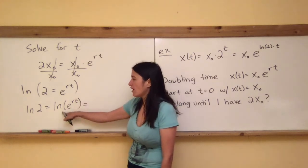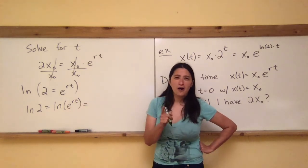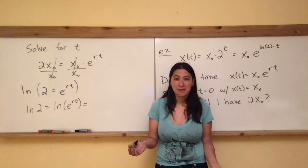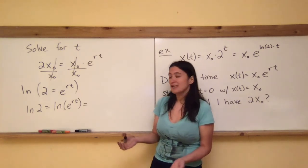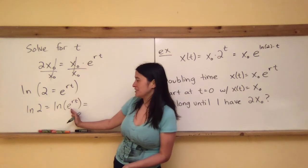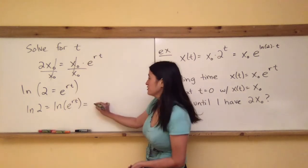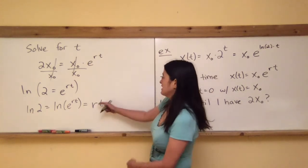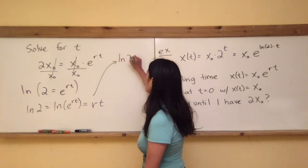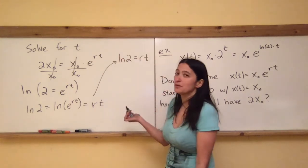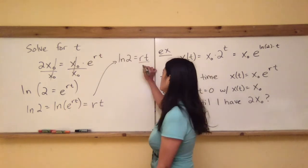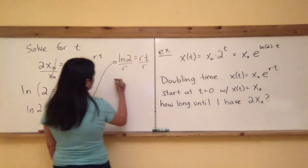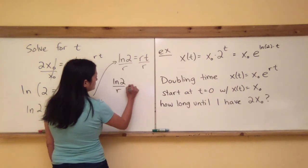And the natural log of e^(RT), what does that simplify to? Remember log and e, they're inverses of each other, remember? So they cancel out each other's operations. If you're canceling out the exponentiation by taking the natural log of it, you're just going to get whatever you had in the exponent. So you're going to get RT. So now I've got ln(2) = RT, and I simply want to solve that for T. So I'm just going to divide both sides by R, and I get that ln(2)/R = T.